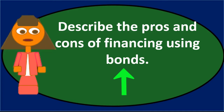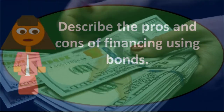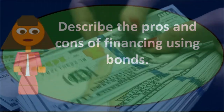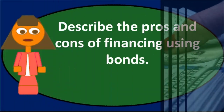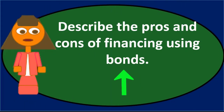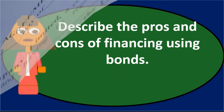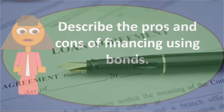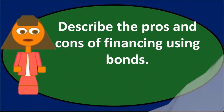Bonds are most similar to a note. A bond is where we receive money from individuals who are investing in the bond, and we pay back an obligation. A bond is a promise to repay — typically we pay back the principal at the end and some type of fixed interest throughout the life of the bond, in exchange for cash.